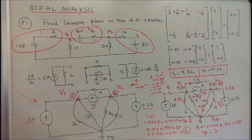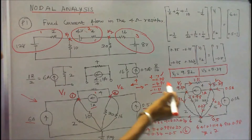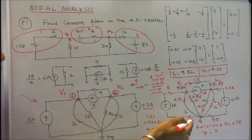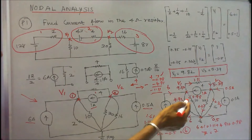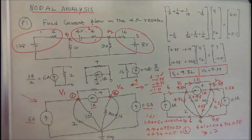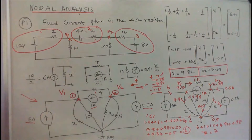Now I verify Kirchhoff's current law. At node 1, current towards the junction is 6 plus 1 equals 7. Current leaving node 1 is 4.91 plus 0.98 plus 1.11, which equals 7. So current towards the junction equals current leaving the junction, both equal to 7. Current flow in the 4 ohm resistor is confirmed as 1.11 amps.